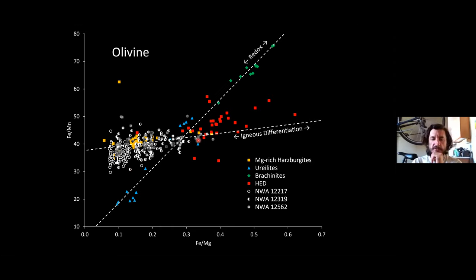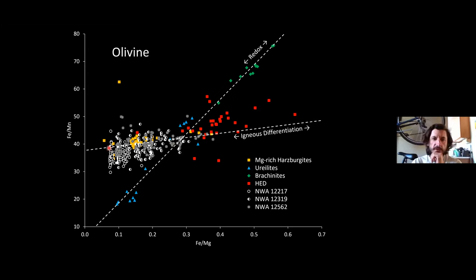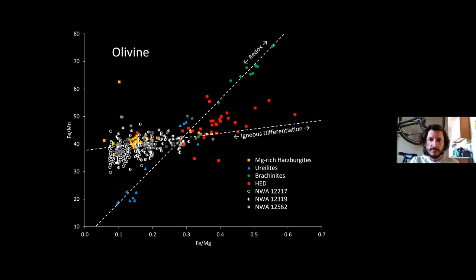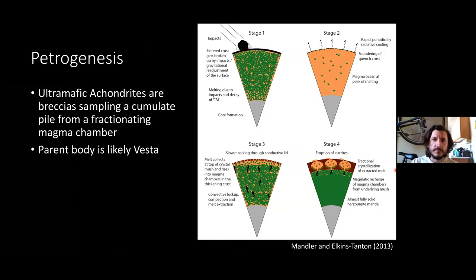Regardless of whether all the HED olivine data points are valid, the Mg-rich harzburgites and the ultramafic achondrites are definitely forming this tight grouping reflective of igneous fractionation. There should be something to balance the well-defined cluster — it could be those data points or something that's just missing from the collection. Moving on to petrogenesis: everything so far points to these breccias sampling a cumulate pile from a fractionating magma chamber, and the parent body is likely Vesta.